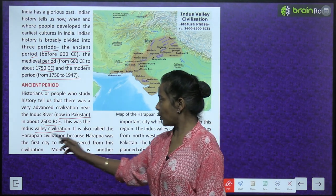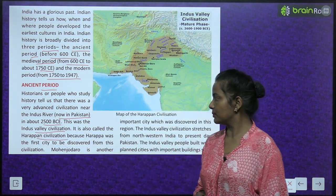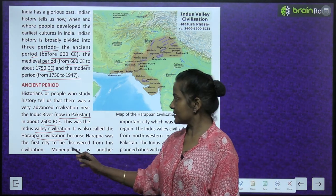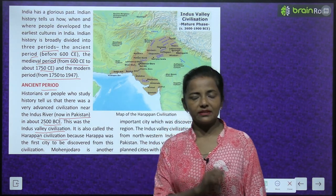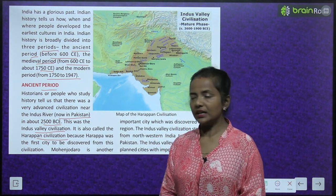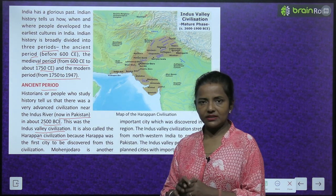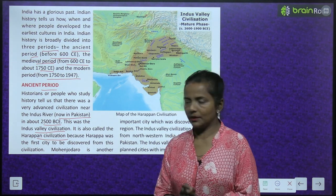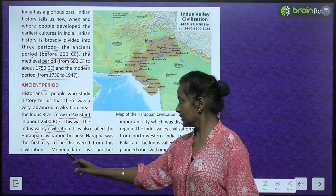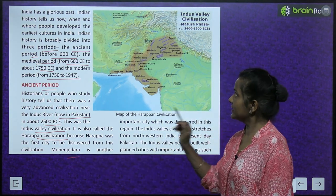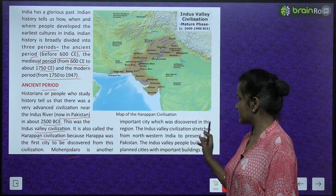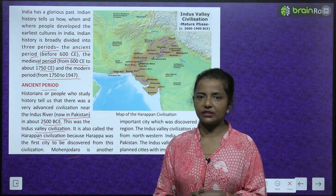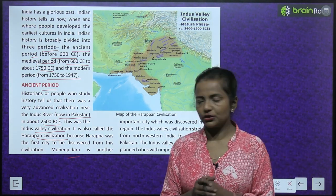It is also called the Harappan Civilization because Harappa was the first city to be discovered from this civilization. This civilization is also called Harappan Civilization because the first city discovered in the Indus Valley Civilization was Harappa. Mohenjo-daro is another important city which was discovered in this region.